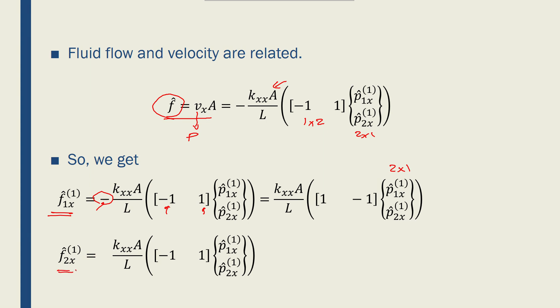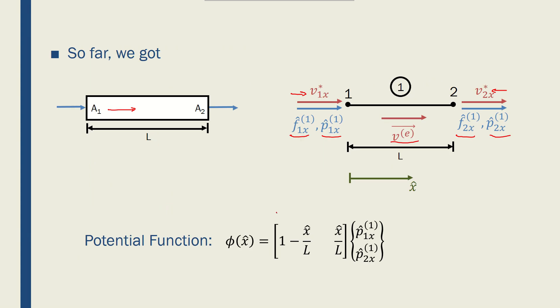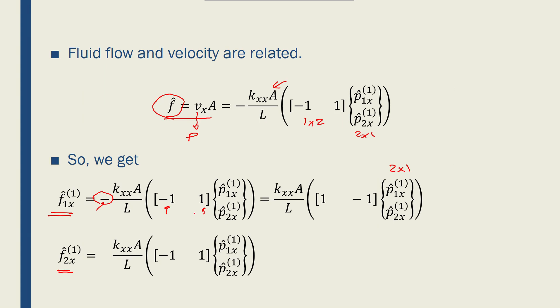We can do the same thing here. But if you remember from this slide that f2x and p2x are moving outward from the element, so f2x is actually negative, and as a result, we remove that negative sign from here. Because if we multiply a negative by a negative, we'll get a positive. So this becomes kxx times A over L minus 1, 1, p1x, p2x. Now we have the same coefficients for our matrix formation.